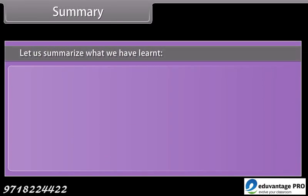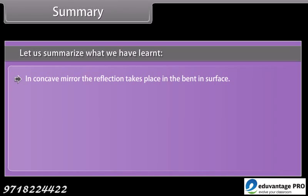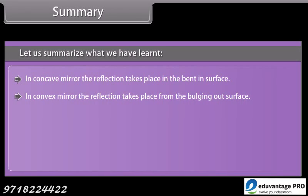Summary — let us summarize what we have learned. In a concave mirror, the reflection takes place at the bent-in surface. In a convex mirror, the reflection takes place from the bulging-out surface.